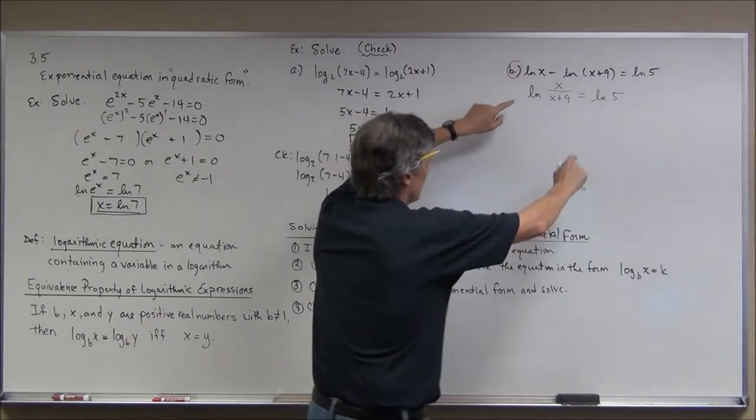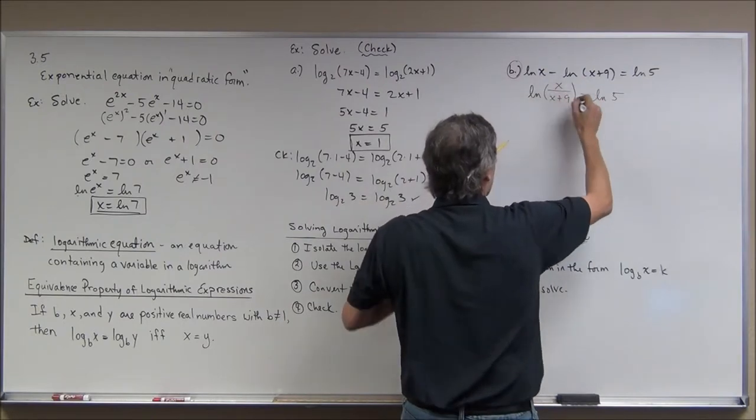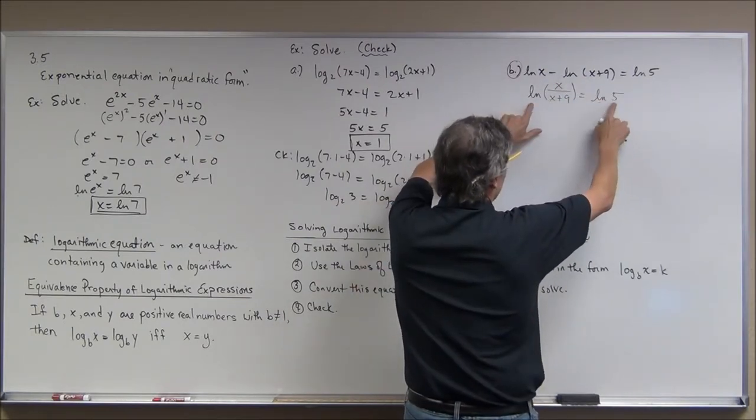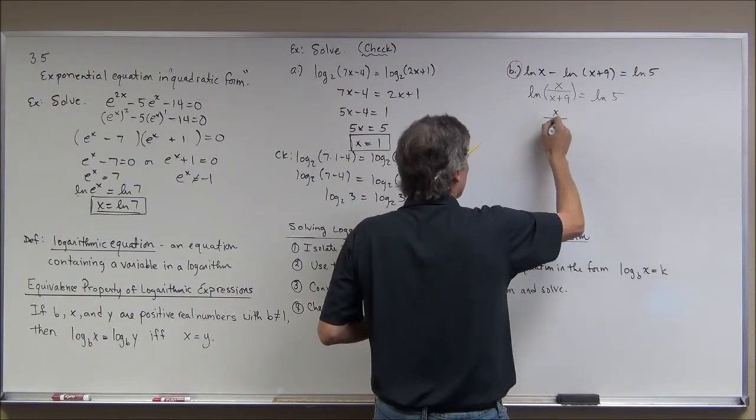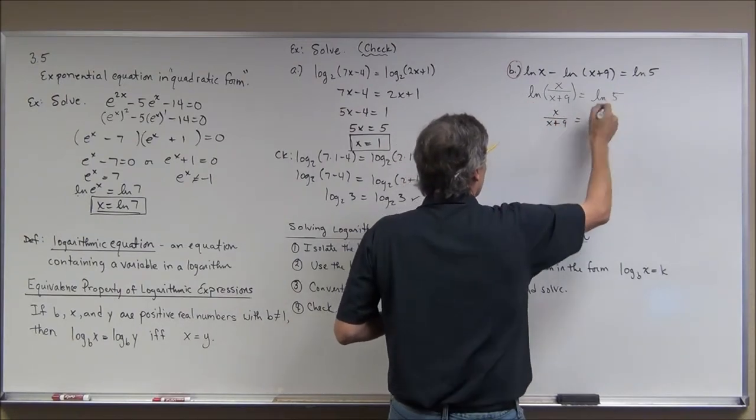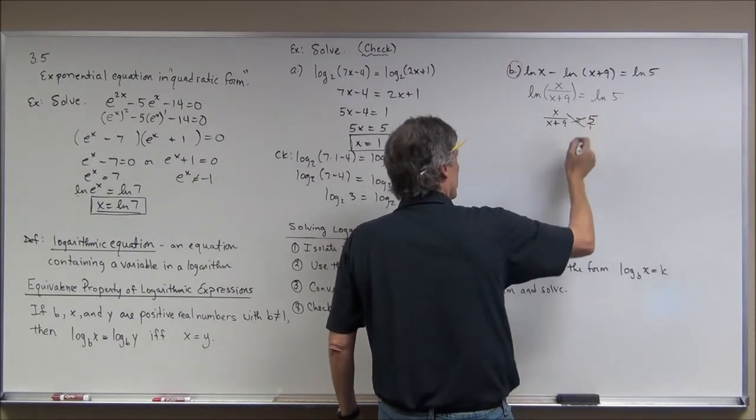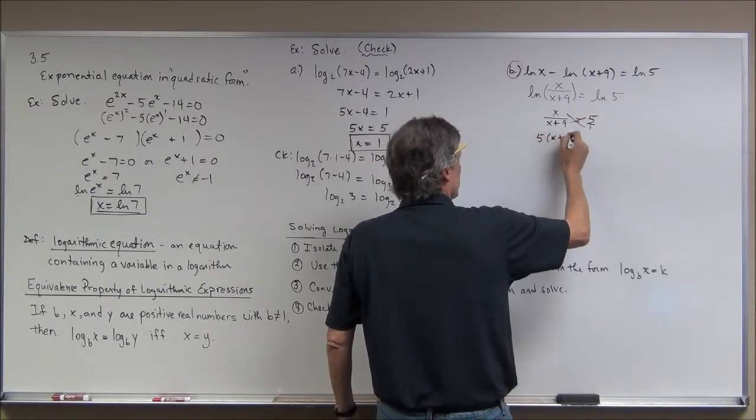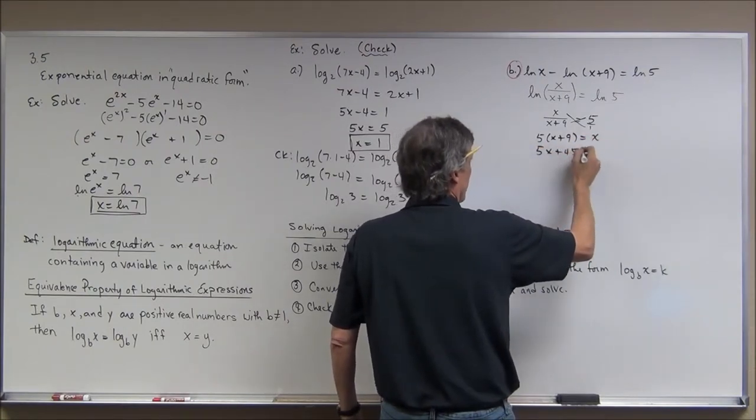Because by writing it that way, by using that property on quotients, and rewriting it in this form, I have log of something equals log of something, same base log, natural logs. That means this expression has to equal this expression. And now I can solve that. I can put 5 over 1 and cross multiply. I have 5x plus 45 is equal to x.